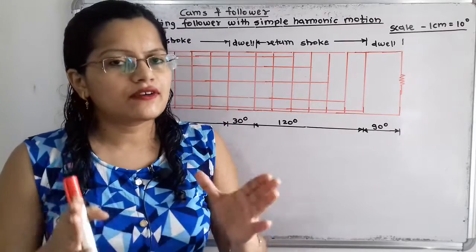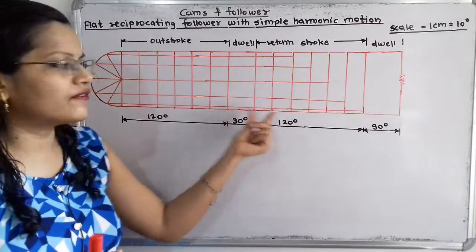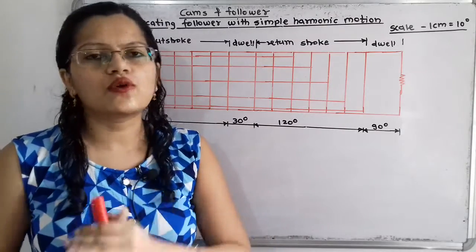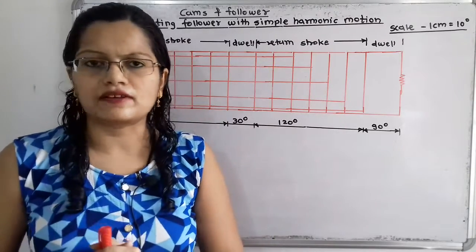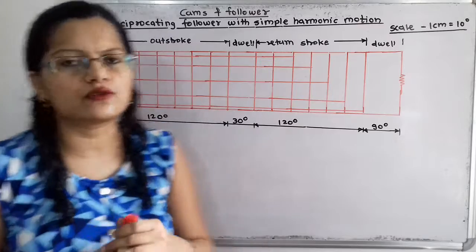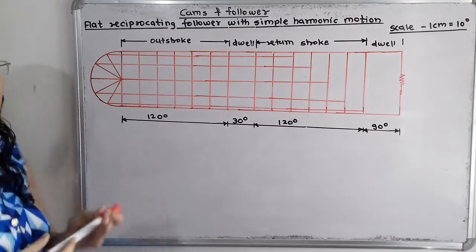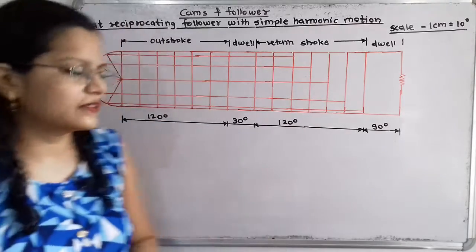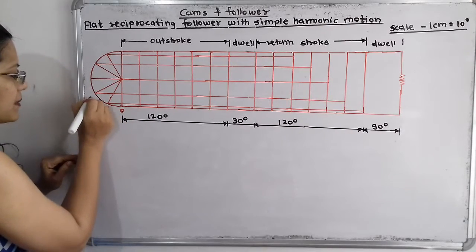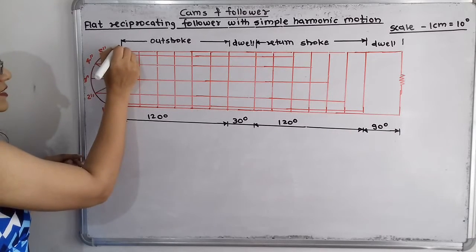During the dwell period the follower is at rest, so no need to make any parts during the dwell period. For this semicircle also we have to make 6 number of equal parts. The angle covered is 180 degree, so 180 divided by 6 equals 30 degree — each angle is 30 degree apart. We will give here the numbers: for this semicircle, starting from 0 then 1 double dash, 2 double dash, 3 double dash, 4 double dash, 5 double dash, and 6 double dash.